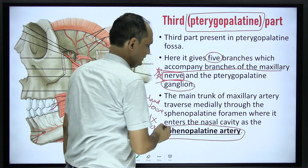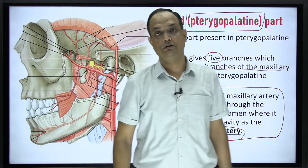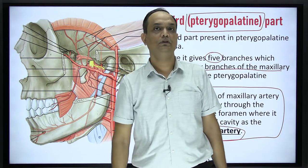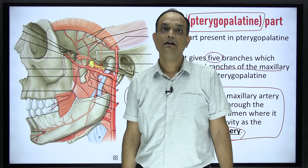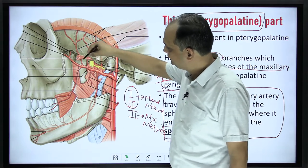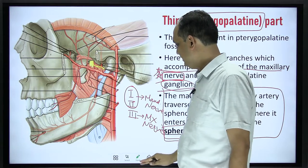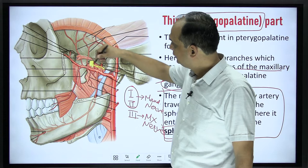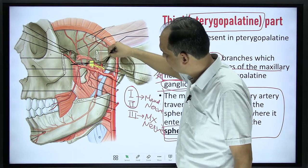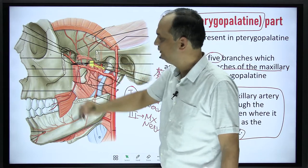The main trunk of the maxillary artery traverses medially through the sphenopalatine foramen, where it enters into the nasal cavity as the sphenopalatine artery. The question is: what is the terminal branch or continuation of the maxillary artery? The answer is the sphenopalatine artery. Now looking at the diagram, this is your lower larger head — the lower larger head of the lateral pterygoid muscle. Up to this point you have the first and second part, and beyond this is your third part of the artery.